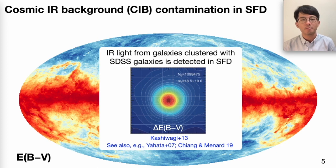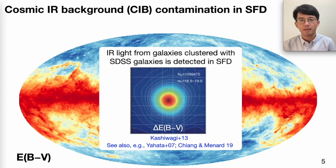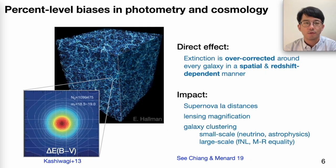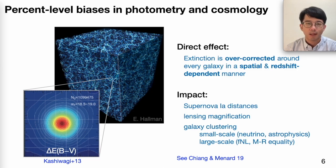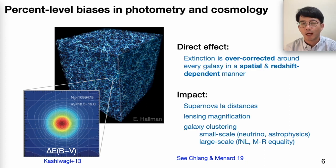There is, however, one major issue that has been discovered and rediscovered in the literature: SFD is contaminated by the cosmic infrared background, the CIB. This is perhaps unsurprising because the CIB, or dusty galaxies, has very similar SED to the galactic dust. When we use SFD to do extinction correction for extragalactic objects, because of this CIB contamination, the extinction will be overcorrected around the locations of galaxies. Moreover, the level of this overcorrection is spatially and redshift-dependent, which becomes a systematic in precision cosmology looking for redshift-dependent or angular-dependent features. Back in 2019, I did a paper with Brice Ménard to discuss how these extinction correction biases propagate into different cosmological probes.